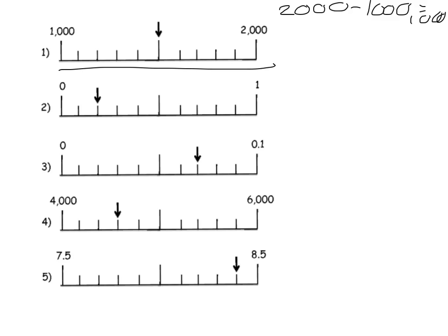Then I need to count how many jumps there are: 1, 2, 3, 4, 5, 6, 7, 8, 9, 10. So the second part is to divide the total value by how many jumps there are, which gives me 100. So now I know each jump is worth 100.